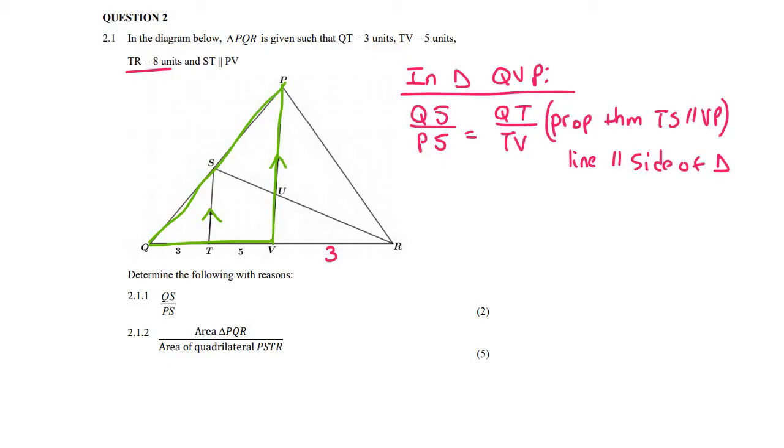So I've seen those two different reasons. And so we can go fill this, and then QS over PS is equal to QT, which is 3, over TV, which is 5. Okay, so that's number 2.